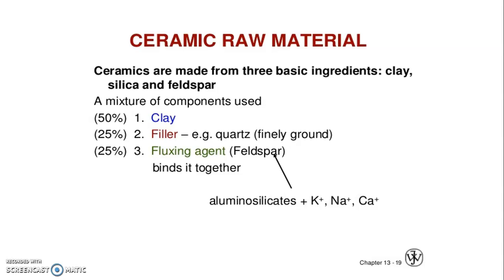Feldspar is a combination of aluminum silicate plus potassium, sodium, or calcium ions. It is mainly used for binding the components together.